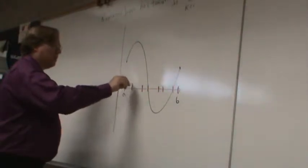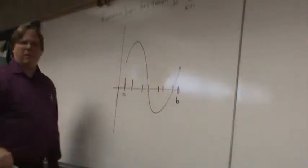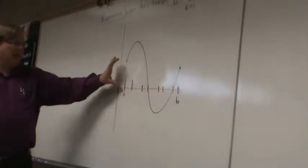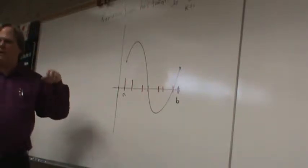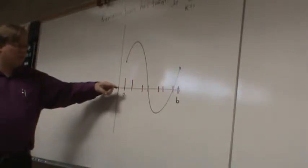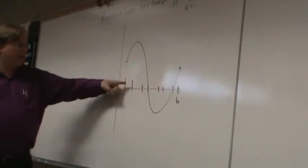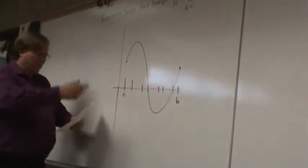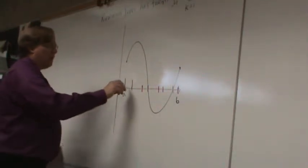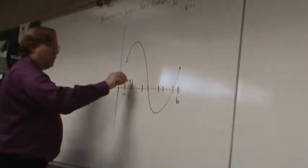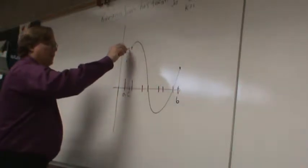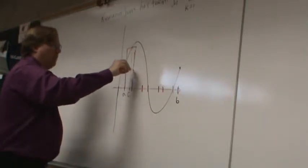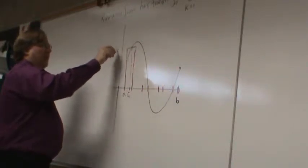When you make a partition, remember the whole LRAM, RRAM, MRAM thing. The big question is: I know the width of my rectangle — how do I get the height? The fact is, you don't have to just choose the y-coordinate of the leftmost, rightmost, or midpoint. You can choose any point you want. I'm going to call this point C sub 1, so the height of this rectangle ends up being f of C sub 1.